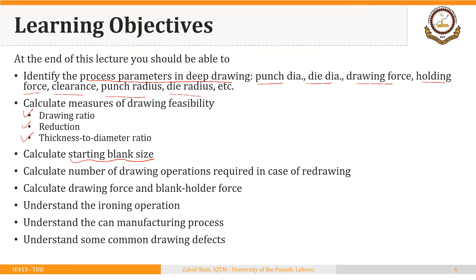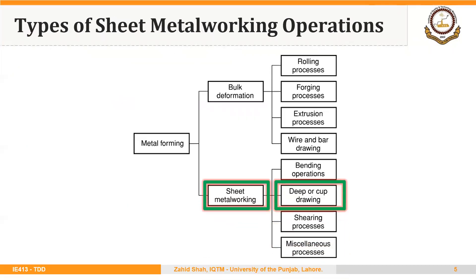You should be able to calculate the number of drawing operations required in cases of redrawing where more than one drawing operation is performed. You should be able to calculate drawing force and blank holder force. We will also discuss the ironing operation, a secondary operation that can be performed after deep drawing, the process to make cans as an application, and common drawing defects. We have discussed shearing, bending, and now we focus on deep or cup drawing.